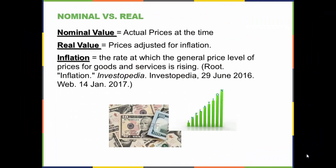A nominal value is one stated in today's actual prices. For example, the nominal value of a Big Mac is $3.99. The real value is price adjusted for inflation. Inflation is the rate of increase in prices for goods and services over time. The real value of a Big Mac using 1980 dollar values as the base year is about $5.99 — meaning if we were to buy a Big Mac today using 1980 dollar values, we would have to spend $5.99. These terms are also applied to GDP, giving us nominal GDP, which is GDP stated in today's actual prices, and real GDP, which is nominal GDP adjusted for inflation.